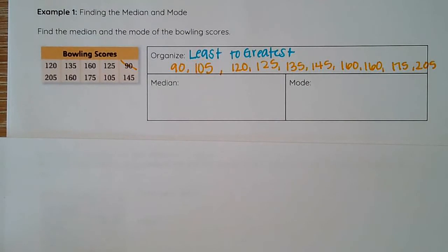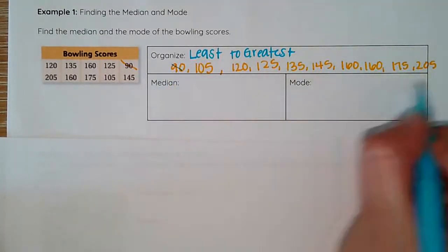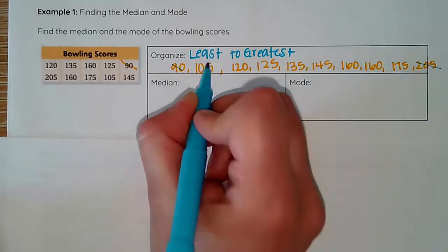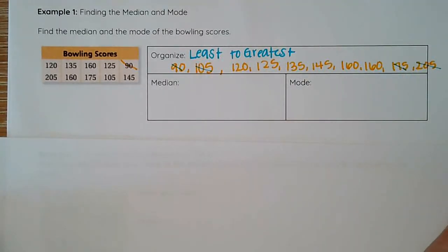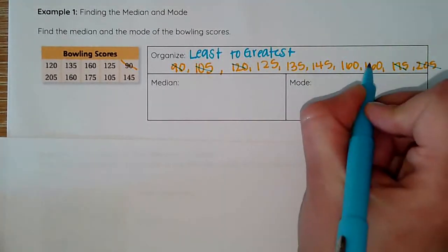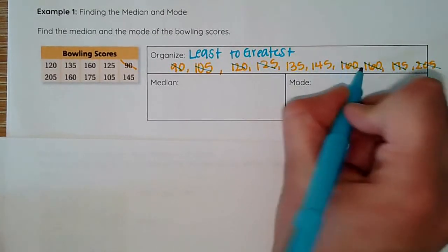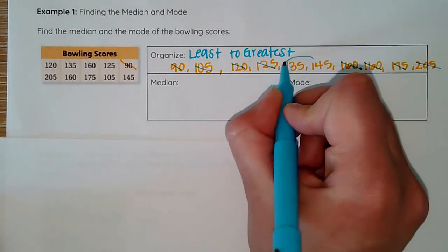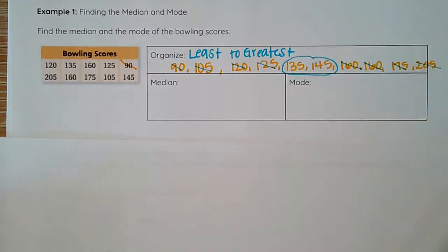I've got 90, 205, 105, 175, 120, 160, 125, 160. Now here I have two medians, but as I said before we can't have two.